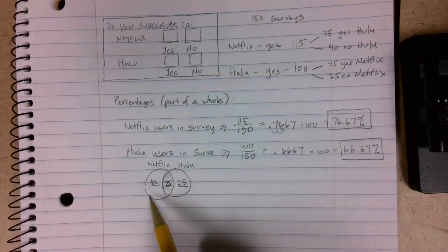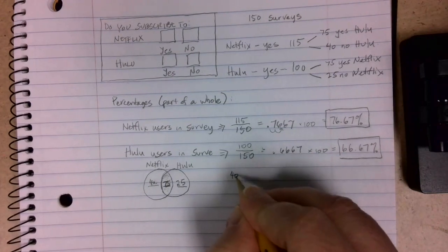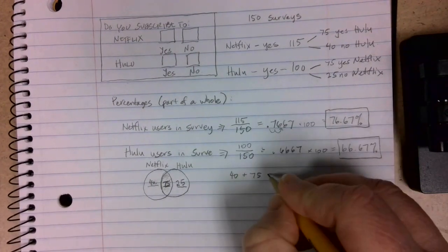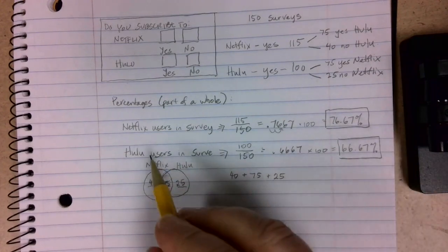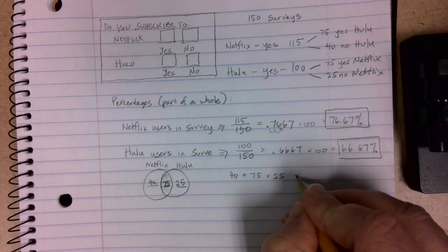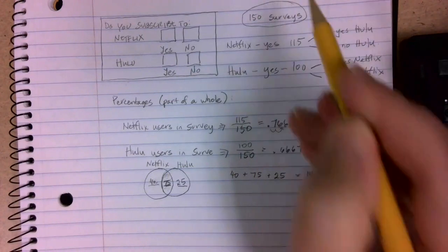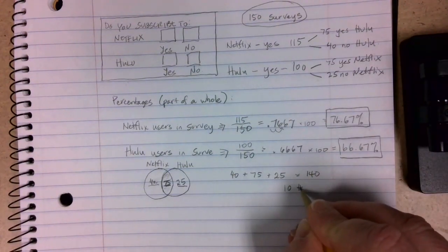Now, if I look at how many people checked some box, there were 40 people that checked Netflix only, 75 people that checked Netflix and Hulu, and 25 people that checked only the Hulu box and no to Netflix. If I add this together, I get 140 surveys. Well, there were 150 surveys given out, which means that there were 10 that did not check either.